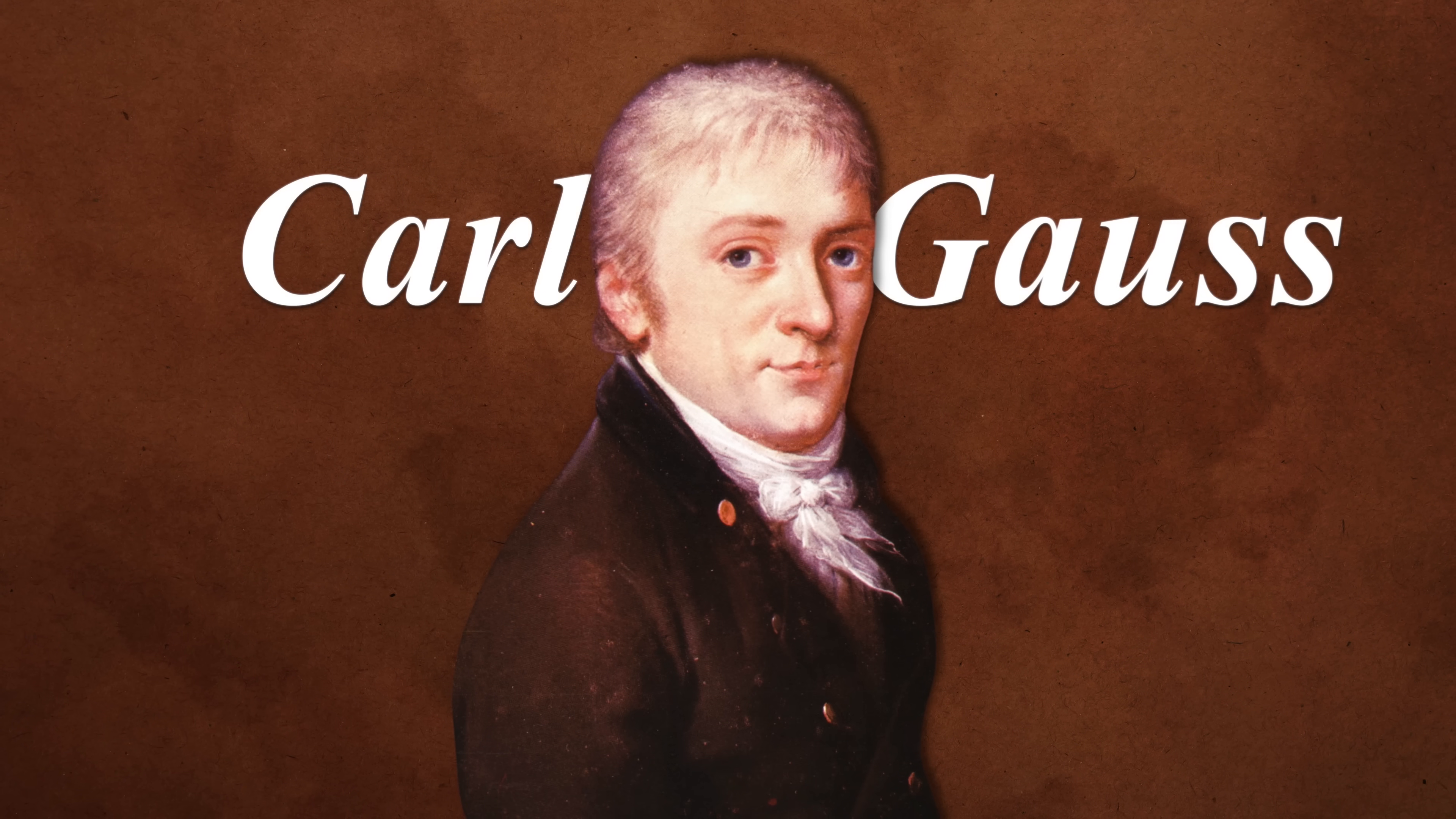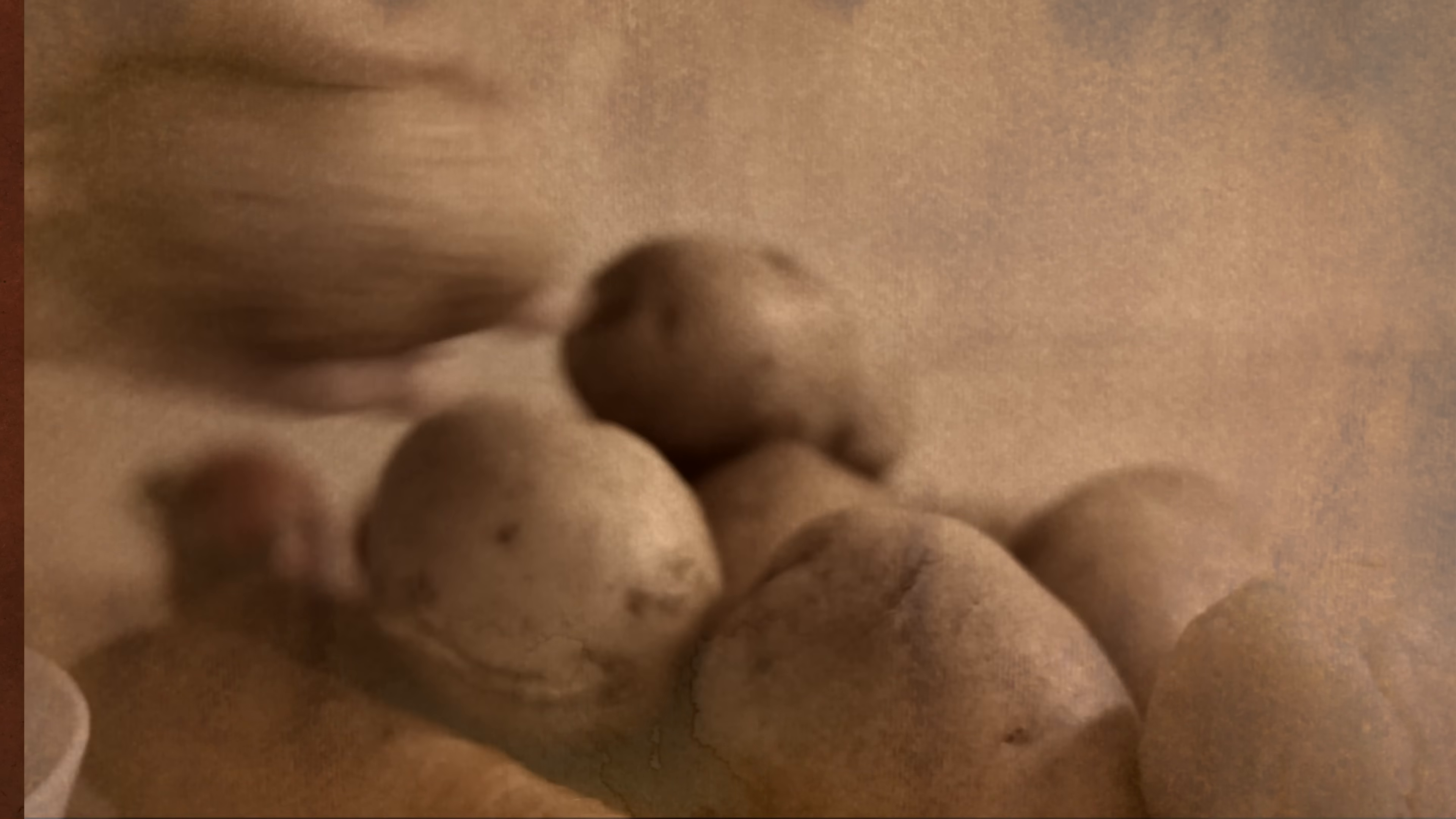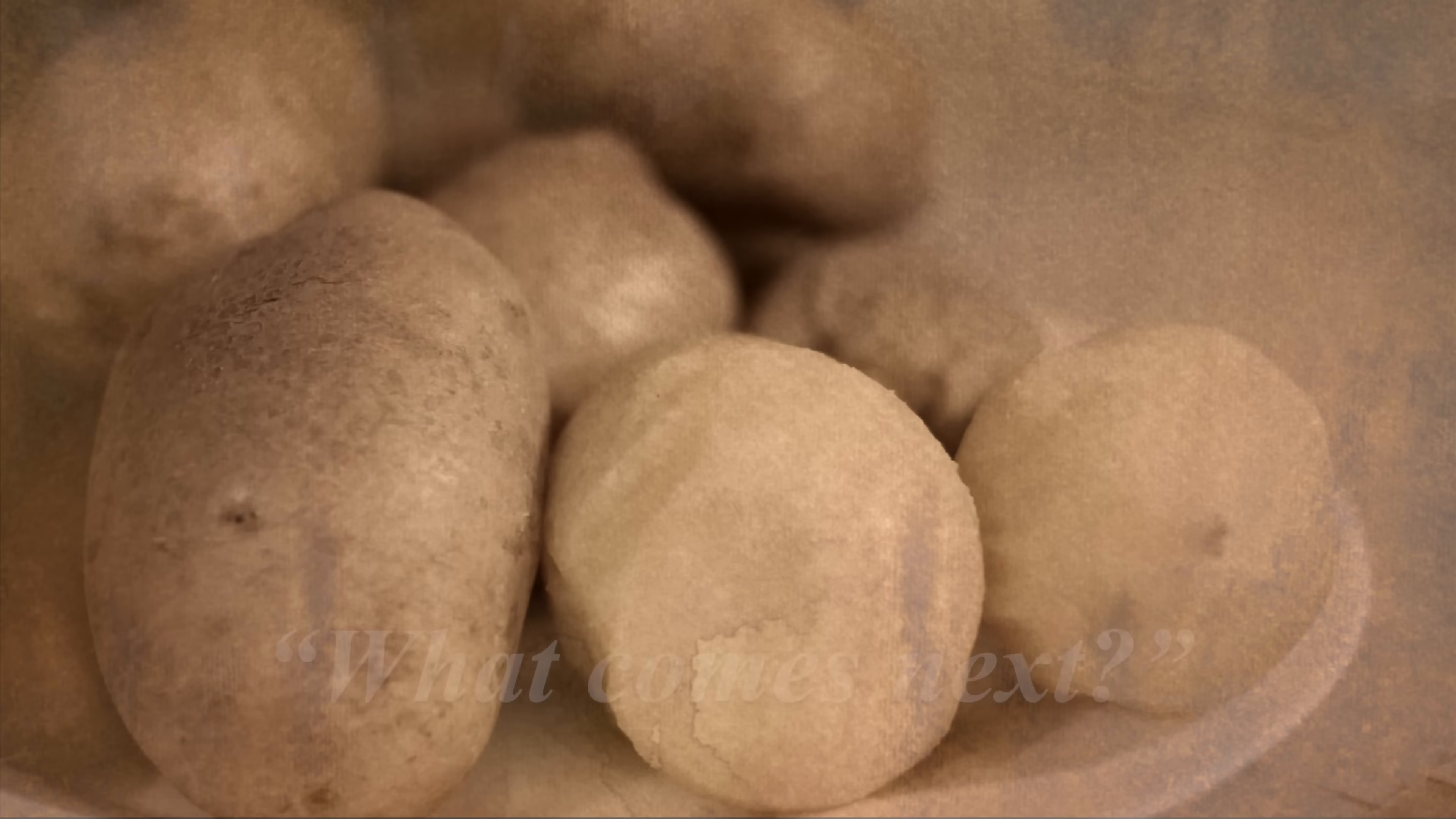From the very beginning, Dorotea sensed her son was extraordinary. When Carl was just two years old, he surprised her by crawling up on the table where she was preparing soup. He pointed to the potatoes, counted the first few aloud, and then asked what comes next? Dorotea, who had no education and could only count up to six, could hardly believe her ears.